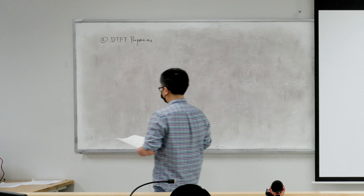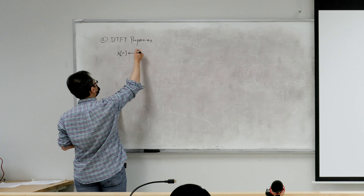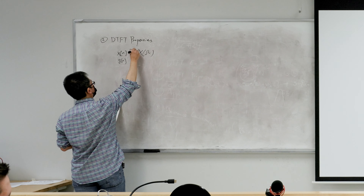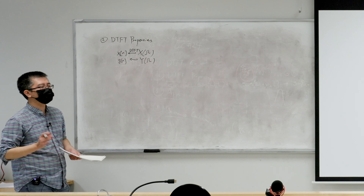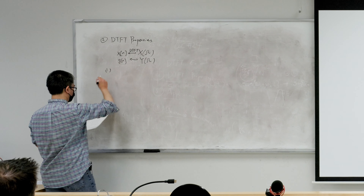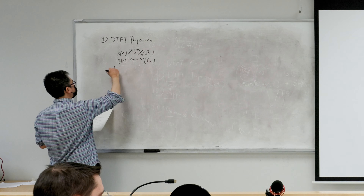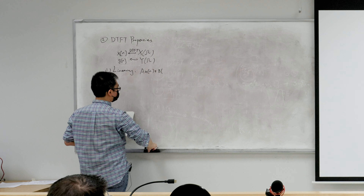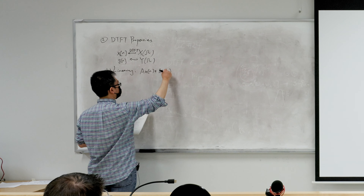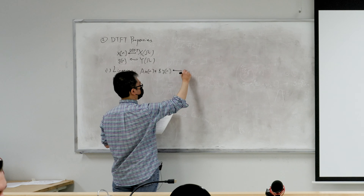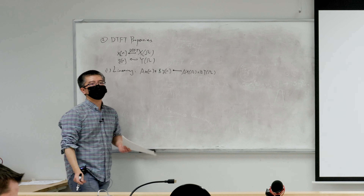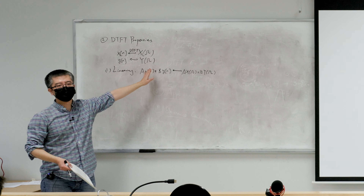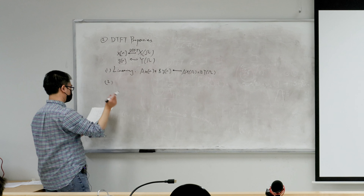Let's go over DTFT properties. Notation: x(n) has DTFT X(omega), and y(n) has DTFT Y(omega). First: linearity — if we do a linear combination of x and y in the time domain, in the frequency domain it will be the same linear combination. The reason we can do this is because in the time domain it's aperiodic, so we don't need to worry about fundamental frequency or period.